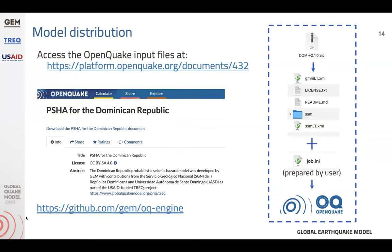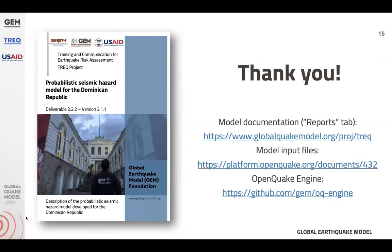The input files for this model are in OpenQuake format and are available on the OpenQuake platform to download. In addition to the types of results I previewed, there are a lot more things you can do using this model in terms of varying the locations, varying the site parameters, and so on. I'd encourage you to take a look at that for those who are interested in using the model. I'll close by pointing you to the model documentation, which has a lot more detail than I was able to give you in this short presentation. Thank you very much.